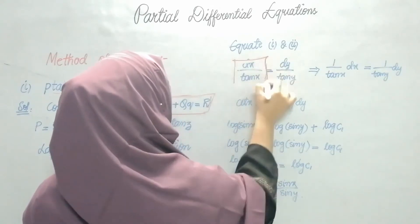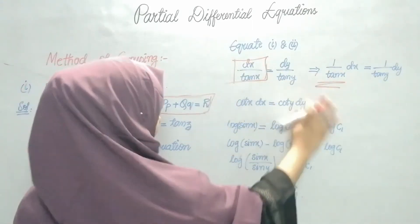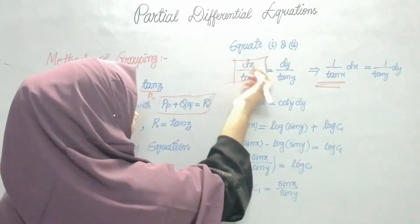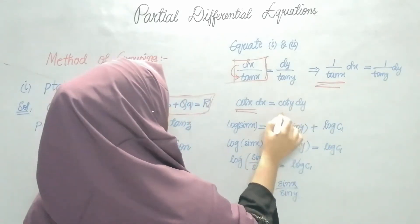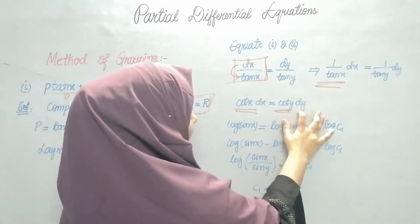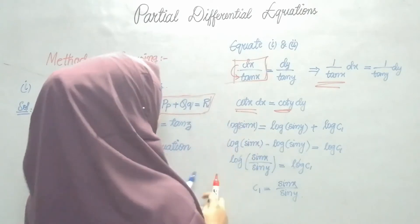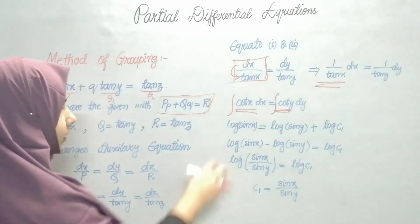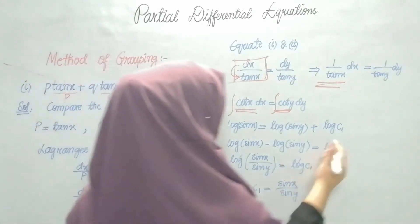Now, dx/tan x is nothing but cot x · dx, and dy/tan y is cot y · dy. So I have cot x · dx = cot y · dy. I am going to integrate this. The integration of cot x is log(sin x), and the integration of cot y is log(sin y). Along with that I get a constant — since both sides have logs, I write it as log C1.